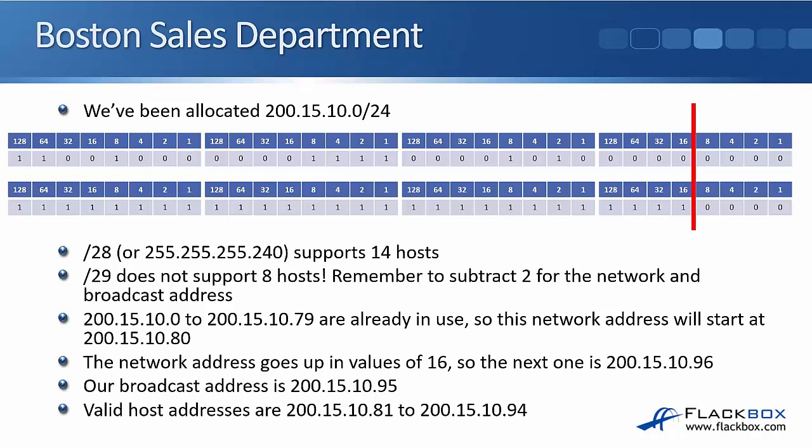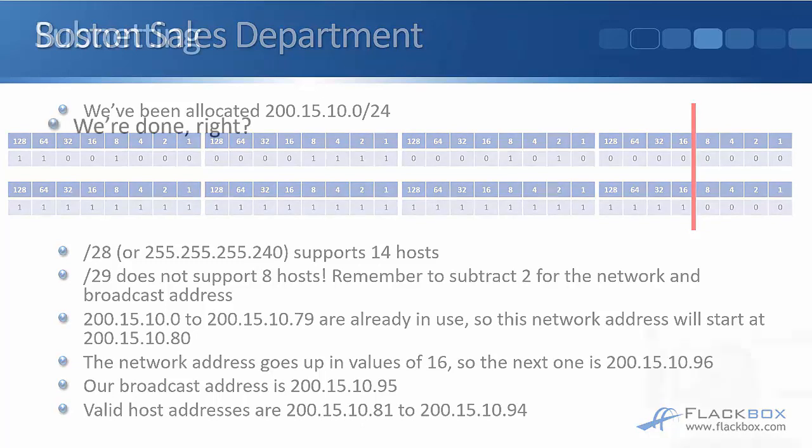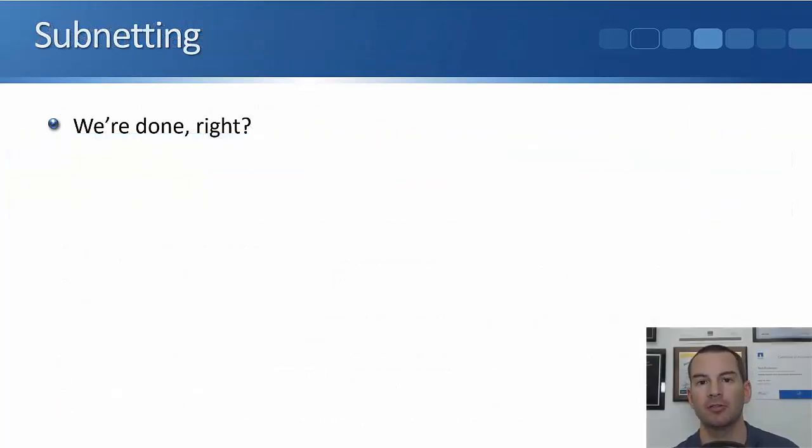The last broadcast address was 200.15.10.79, so our network address will be 200.15.10.80. The line is after the 16, so the next network address would be .96, which means our broadcast address is going to be 200.15.10.95. The valid host addresses are .81 to .94. So that's it — that was our four departments.